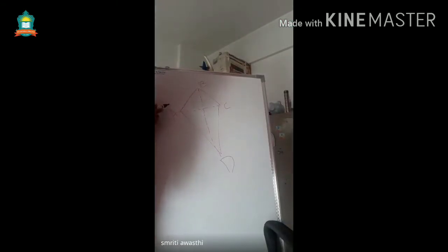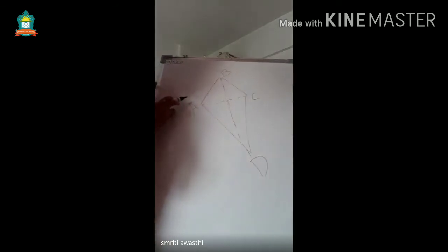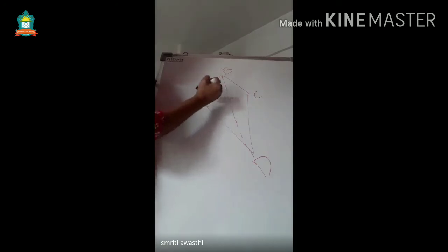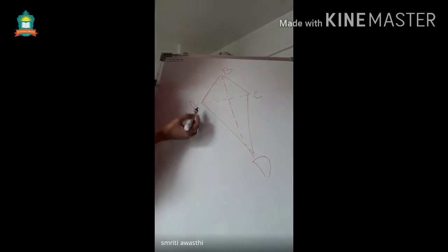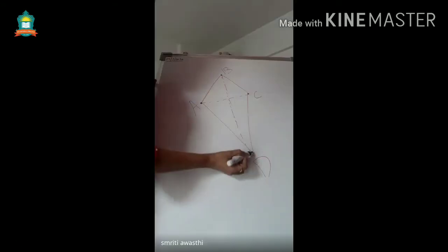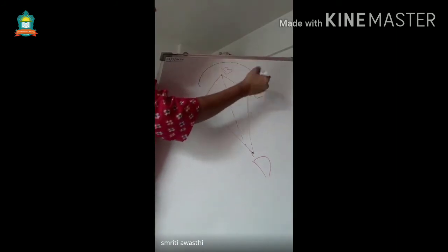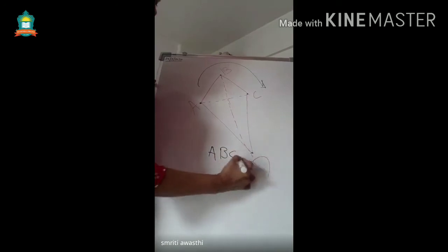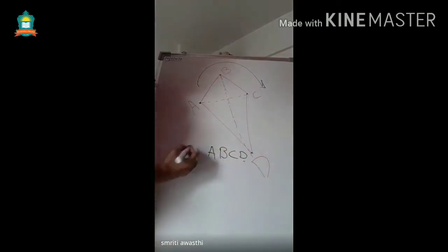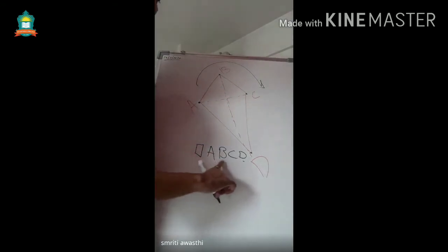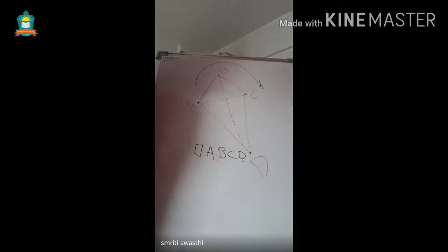In a similar way, we give names to quadrilaterals. Suppose I have drawn a quadrilateral and named it A, B, C, D — it has four vertices. Following the clockwise fashion, we name it A, B, C, D and use the symbol for quadrilateral ABCD.